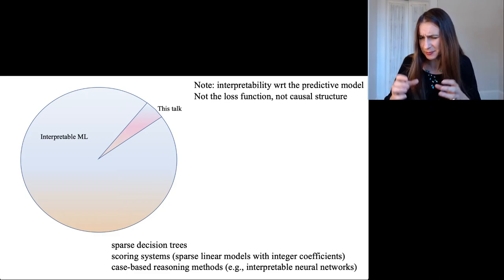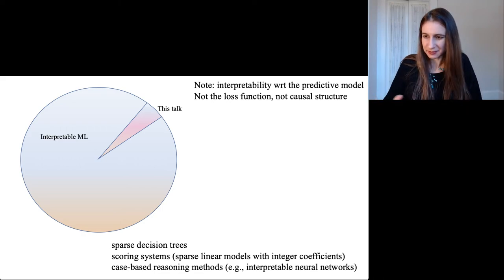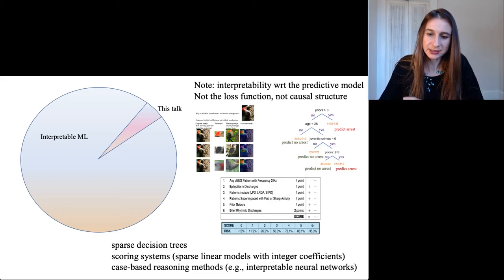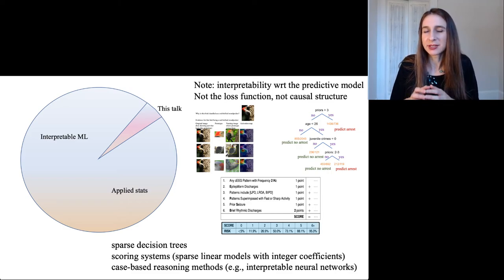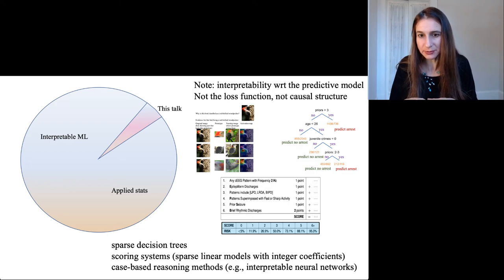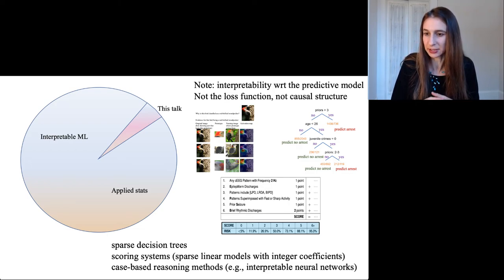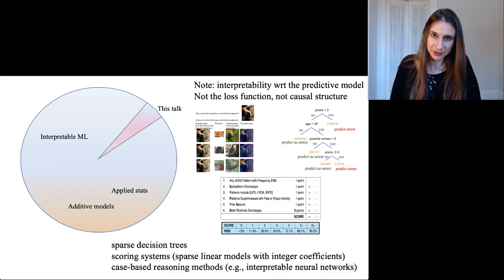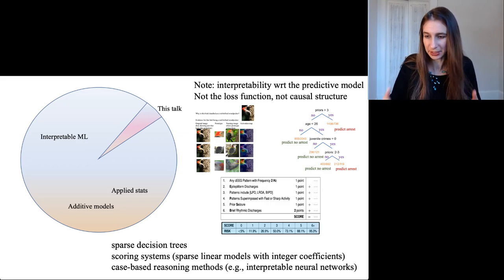I'm going to cover three specialized topics that I've chosen to discuss today: sparse decision trees, scoring systems, which are sparse linear models with integer coefficients like the 2-HELPS2B score, and case-based reasoning methods, in particular interpretable neural networks. I should mention that a good fraction of applied statistical models, and in particular Bayesian statistical models, fit into the definition I gave of interpretable machine learning. Also, additive models are a very powerful class of interpretable machine learning models that I won't have time to discuss today.